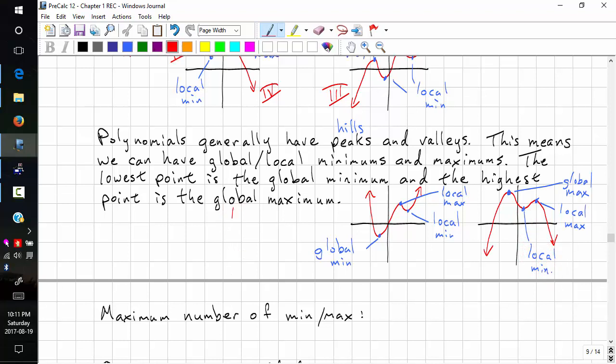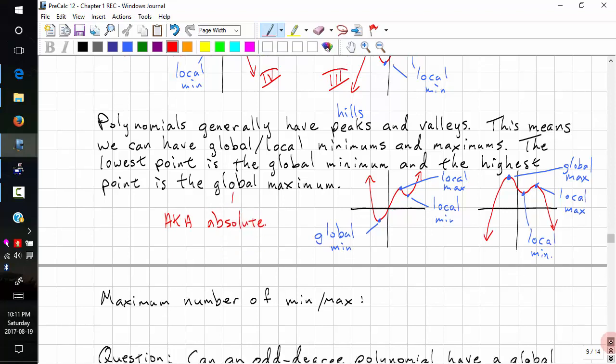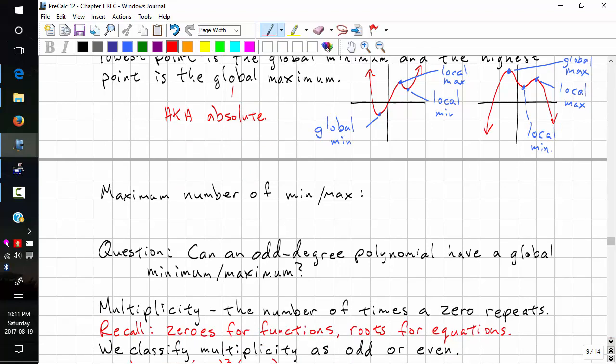And I gave you this term before, it's also known as absolute. And last time we talked about the maximum number of mins and max. It's one less than the degree of the polynomial.